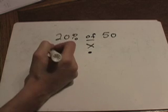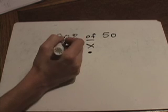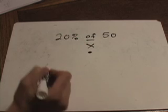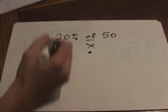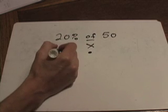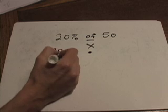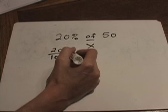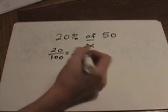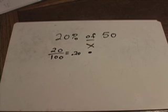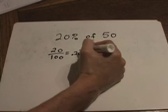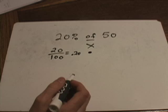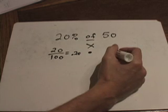20 percent means 20 out of a hundred. The way I remember that is that there are two little zeros in the percent symbol, and there are two zeros in a hundred. So 20 percent is the same thing as 20 out of a hundred. 20 out of a hundred can also be written as 20 hundredths, and we're trying to find what 20 hundredths of — or times — 50 is.